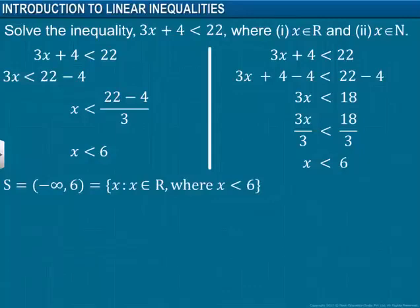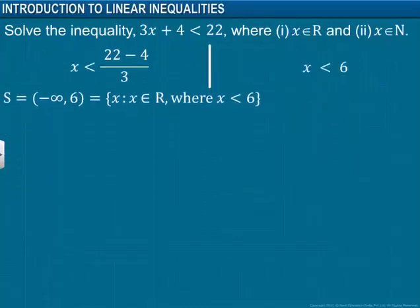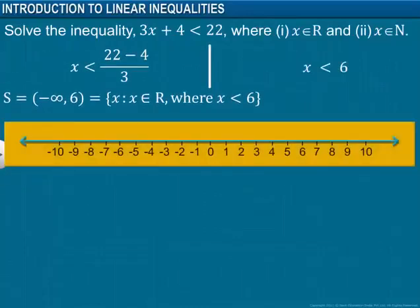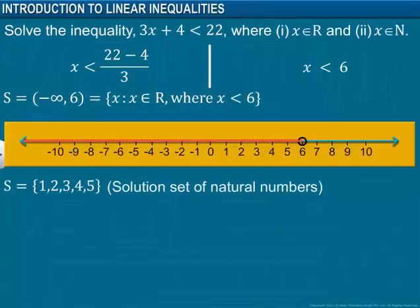Now we will see how an inequality is represented graphically. Since the solution set belongs to real numbers, we take the real line. The solution set contains numbers less than 6, so we mark points to the left of the number 6, but not 6 itself. The solution set of natural numbers for this inequality is also shown.